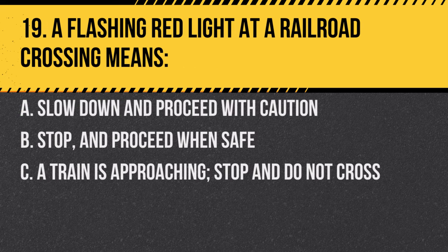Question 19. A flashing red light at a railroad crossing means: a. Slow down and proceed with caution. b. Stop and proceed when safe. c. A train is approaching — stop and do not cross. Answer: c. A train is approaching, stop and do not cross. A flashing red light at a railroad crossing is a warning of an approaching train.